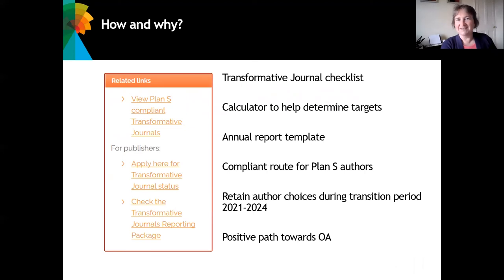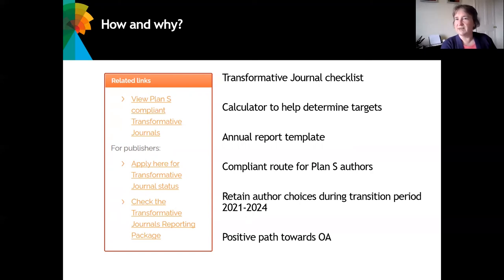On the Plan S website you'll find a list of compliant transformative journals — it's a good way to check out what other journals have done along this route and what they're reporting. There's a link to apply for transformative journal status, and you'll need to provide lots of information about your journals as you start the transformative journal journey. Then there's the all-important journals reporting package, a transformative journal checklist that tells you what you need to do, a calculator to help determine which of the targets you're aiming for in the coming year, and an annual report template.